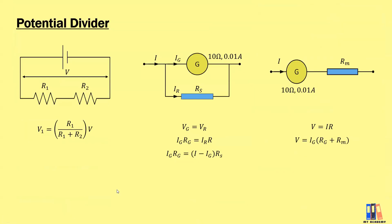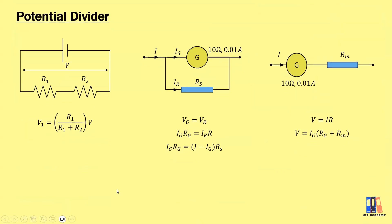We move on to the next topic: the potential divider. The potential divider allows us to calculate voltage directly based on resistance. Also, don't forget about the shunt and multiplier, which are used to build an ammeter and voltmeter. There is no past year question shown here, so you need to do more revision on your own.